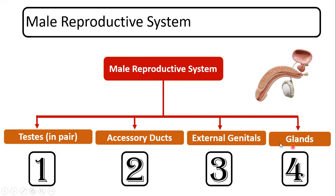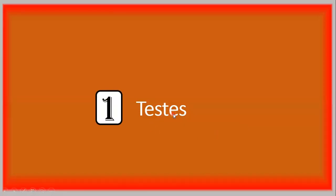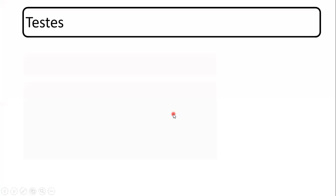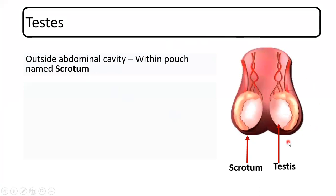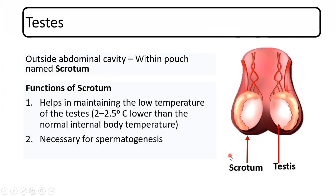Let us go through them one by one. The testis is located outside the abdominal cavity, present in pairs — there are two testes in males. They are present within a pouch known as the scrotum. The function of the scrotum is mainly to maintain a low temperature for the testes, nearly 2 to 2.5 degrees centigrade lower than normal body temperature, which is required for spermatogenesis — that is, sperm formation.